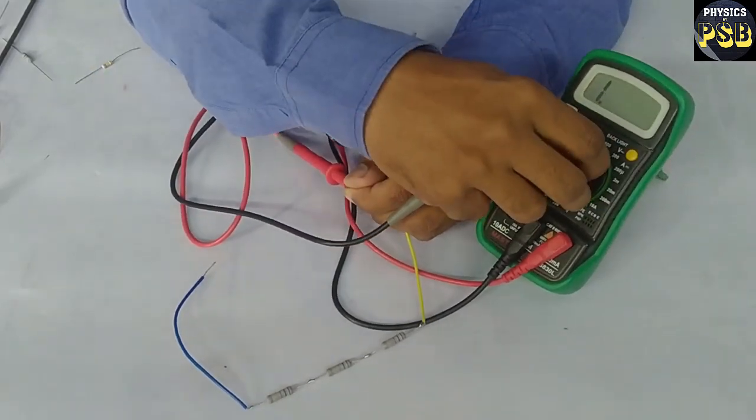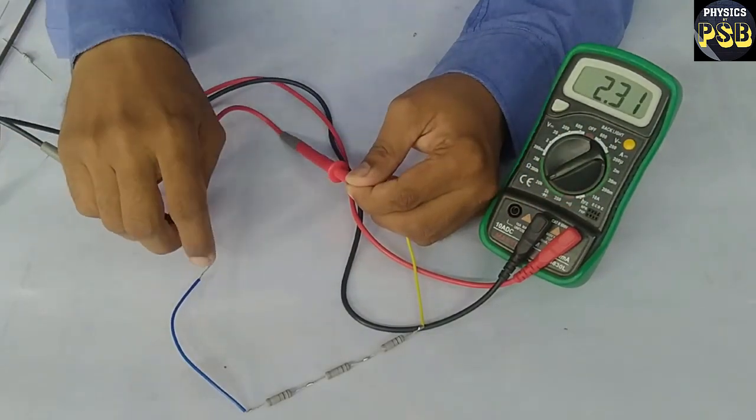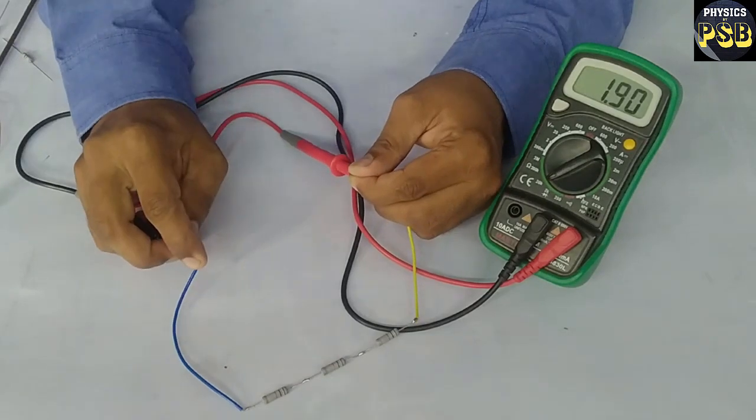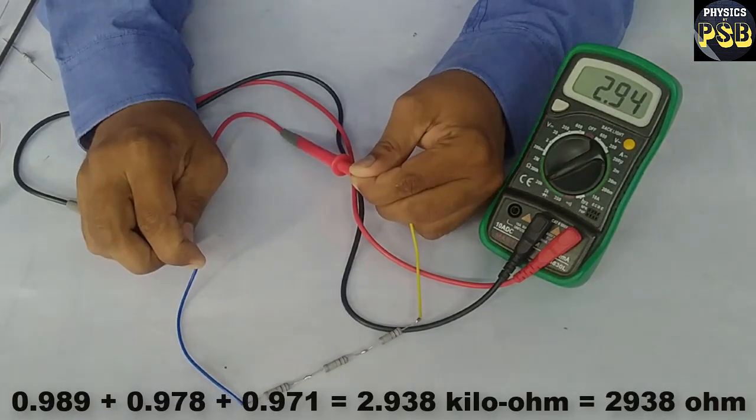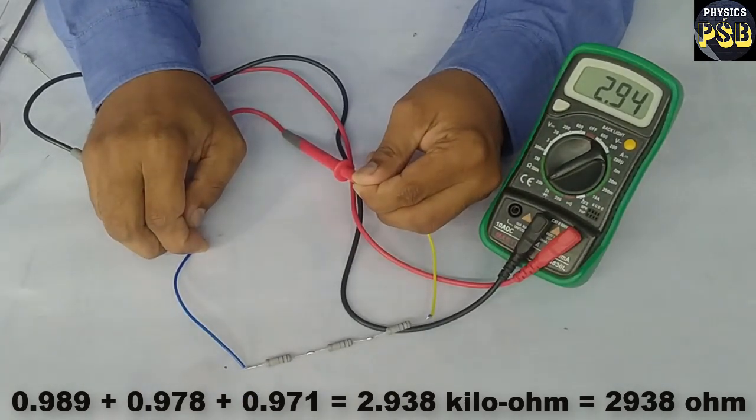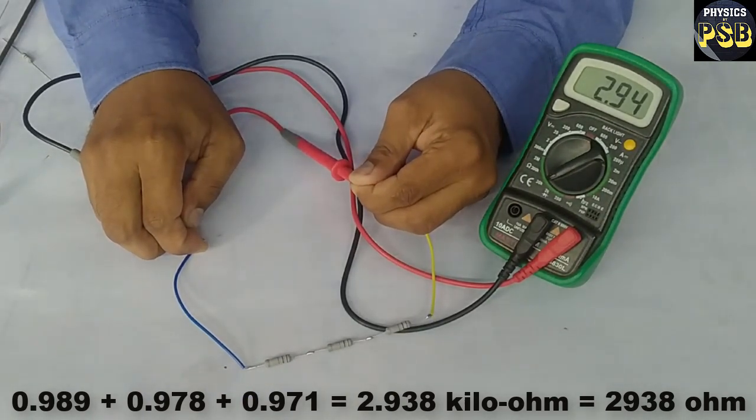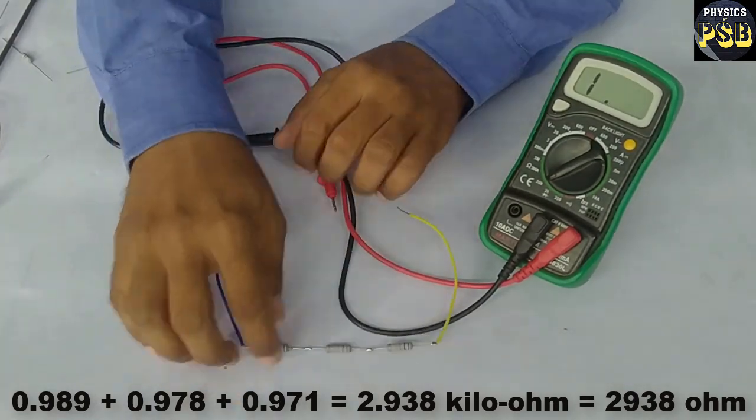The resistance is more than 3 kilo-ohms, so I turn the knob. See, it is 2.95 which is around 3000 ohms or 3 kilo-ohms. This shows that when resistors are taken in series, their resistance gets added up.